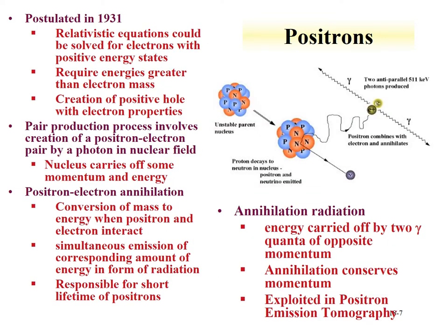An overview of positron decay: a positron-electron interaction annihilates the antimatter positron with a matter electron, creating two photons at 511 keV — each corresponding to the mass-energy of the positron and electron. These photons are emitted 180 degrees from each other. This allows a specific energy of 511 keV to be evaluated as indicative of positron decay. A coincidence system can be set up where photons detected 180 degrees apart in an array allow one to work backwards and determine the location where the positron decayed, enabling high-detail imaging.